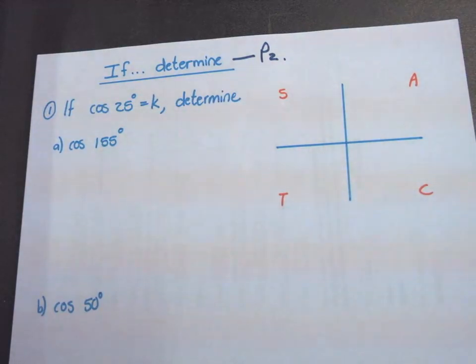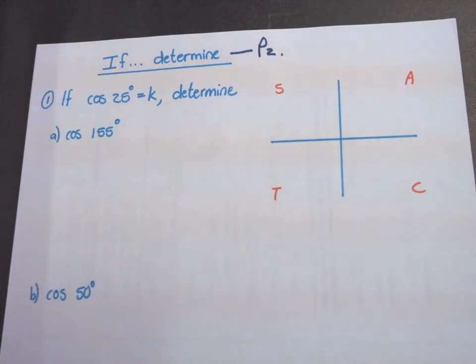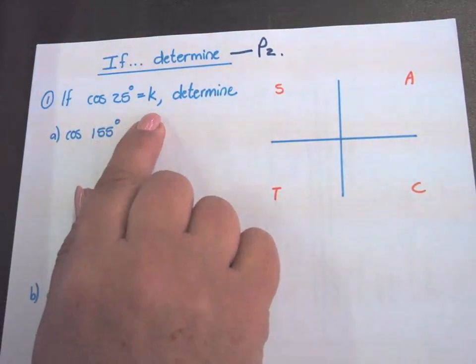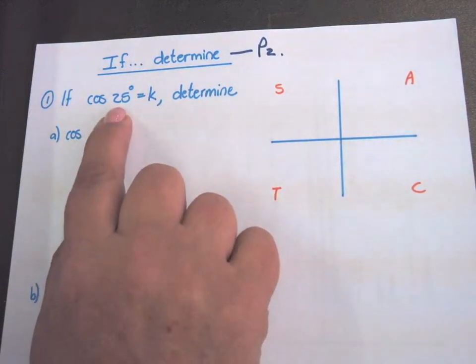The topic for today continues where we left off yesterday. It's part 2 of the if-determined sums in trigonometry. They give us one clue: cos 25 degrees equals K. What differs this lesson from yesterday's lesson is yesterday we had a theta or a beta or an alpha. Today we have a specific degree.